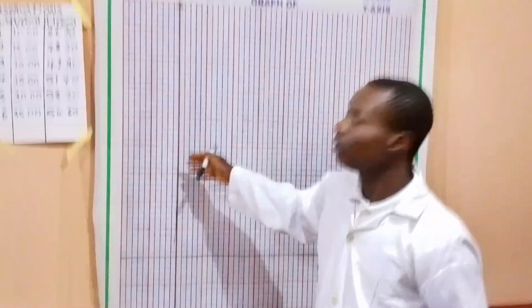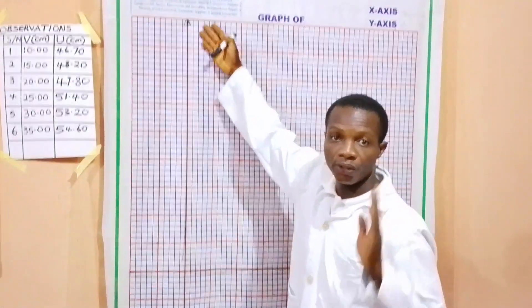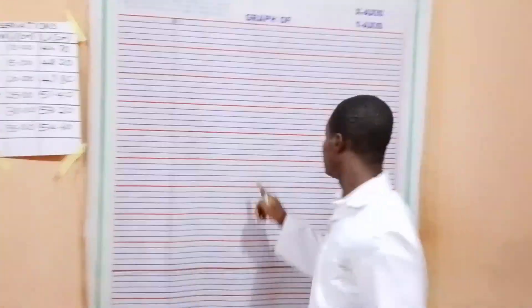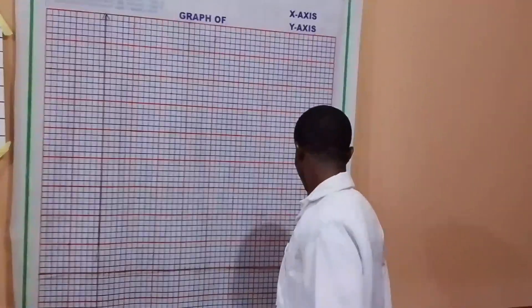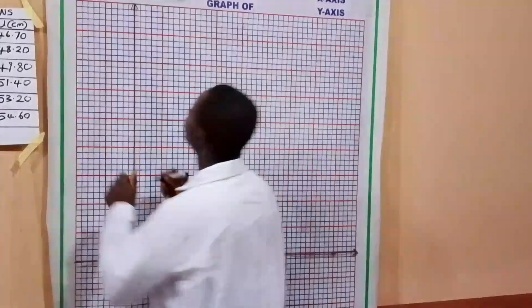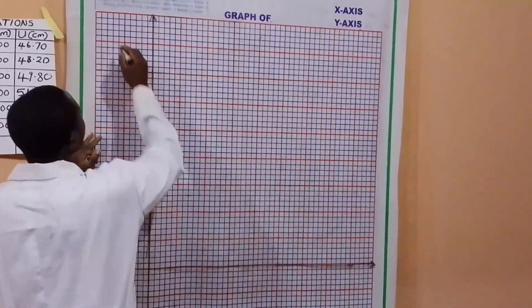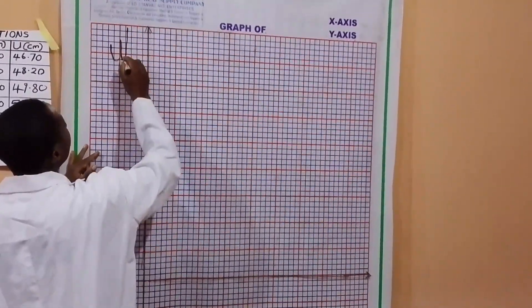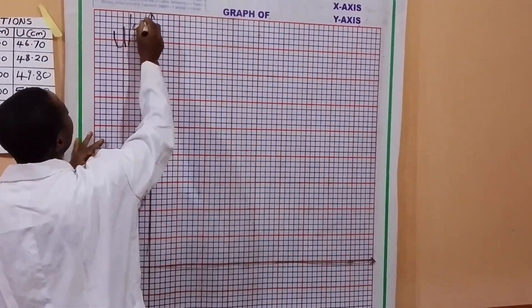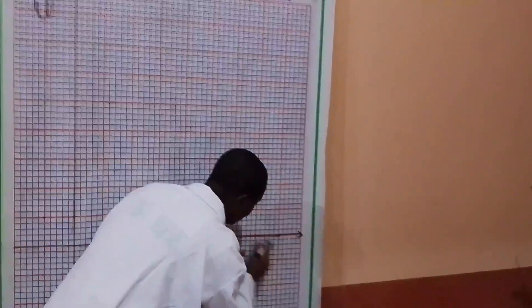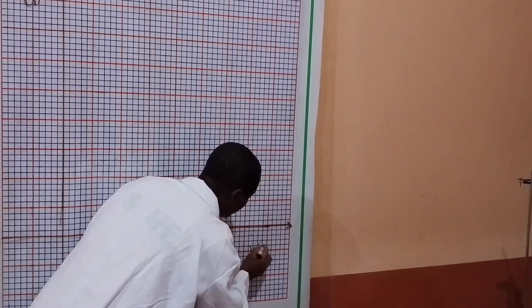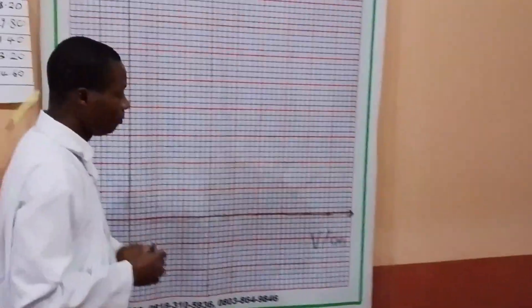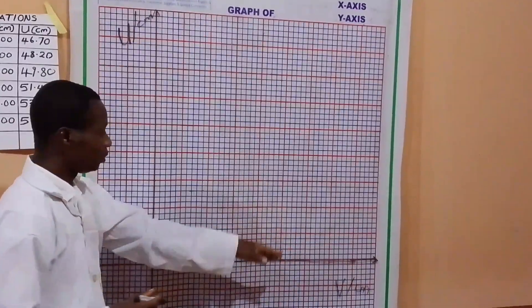You can see this is the U-axis. Once you are done, don't forget that the graph is a vector quantity, so it has an arrow at both the vertical and the horizontal. Now U is in cm, so label U in centimeters. And here, label your V in centimeters. This is how you label the vertical and horizontal axis.